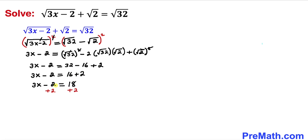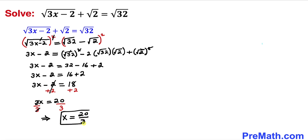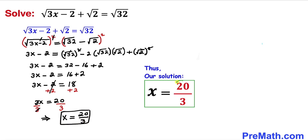Now let's add 2 on both sides, giving us 3x equals 20 on the right hand side. Dividing both sides by 3, x turns out to be 20 divided by 3. That is our solution: x equals 20 over 3.